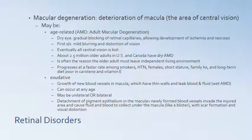Moving into retinal disorders — macular degeneration is the deterioration of the macula, the area of central vision. It may be age-related (AMD) or exudative. Dry AMD involves gradual blocking of retinal capillaries, allowing ischemia and necrosis to develop. The first signs may be mild blurring and a weird distortion of vision. Eventually all central vision is lost. About 2.5 million older adults in the United States and Canada have dry AMD, and it is often the reason an older adult must leave independent living environments.